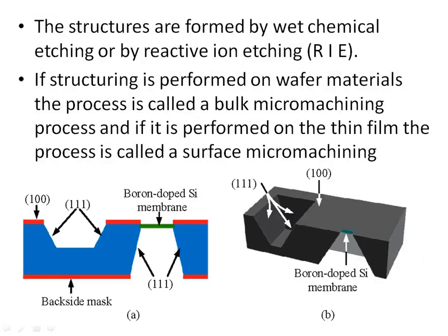The structures are formed by wet chemical etching or by reactive ion etching. If structuring is performed on wafer materials, the process is called bulk micromachining. If it is performed on thin films, the process is called surface micromachining.